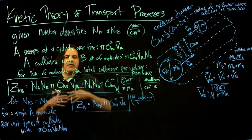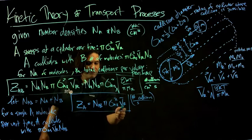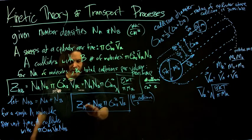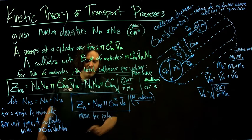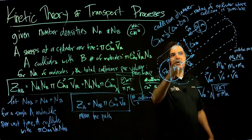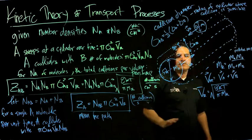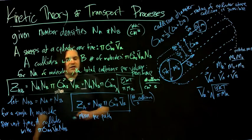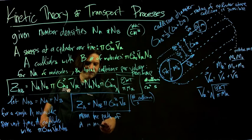We know how much A collides with everything in its surroundings. What is the path it travels before it collides? That's the mean free path. We can find the mean free path—the average path that it travels before it collides—based on how many collisions occur per time and the mean velocity. We're going to analyze the mean free path of A in mixture AB.